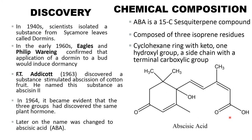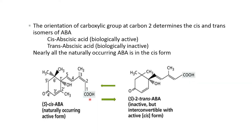Chemical composition of abscisic acid: ABA is a 15-carbon sesquiterpene compound composed of 3 isoprene residues. It has a cyclohexane ring with a keto and hydroxyl group, and a side chain with a terminal carboxylic acid. The orientation of the carboxylic group at carbon-2 determines the cis or trans isomers. Cis-abscisic acid is biologically active, whereas trans-abscisic acid is biologically inactive. Nearly all naturally occurring abscisic acid is in the cis form.